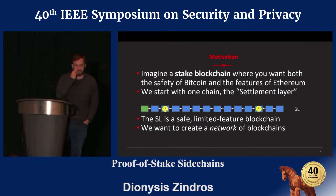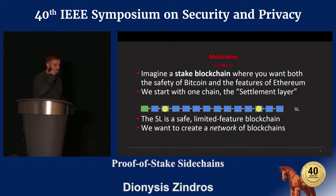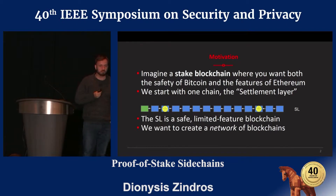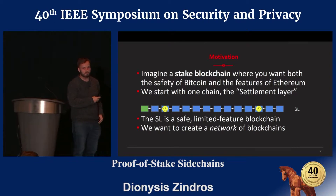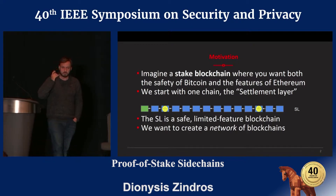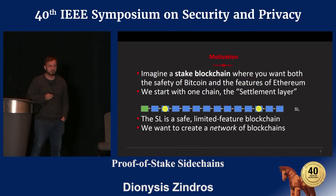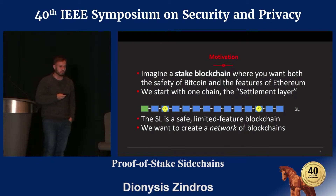Let me start with describing the problem we're trying to solve, in particular for proof-of-stake blockchains. This work will be based on the formalization we have for proof-of-stake blockchains called Ouroboros, a protocol that is pre-existing and provably secure.